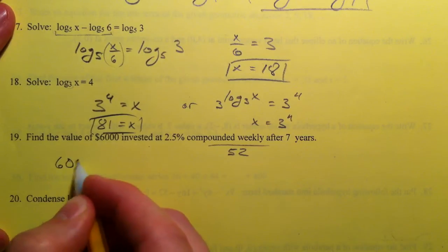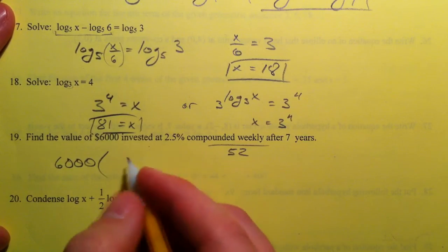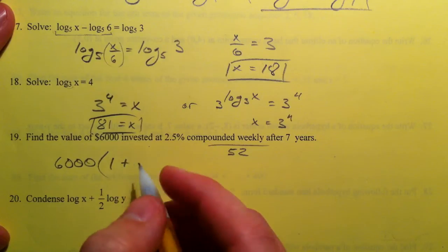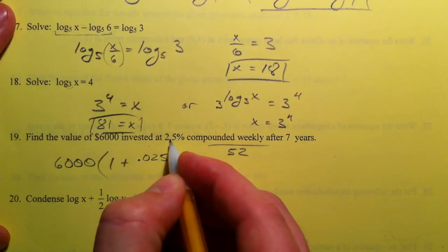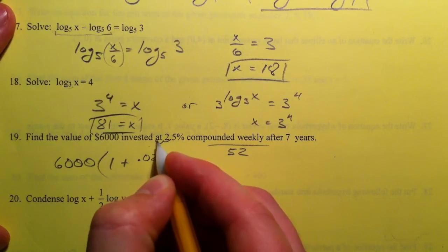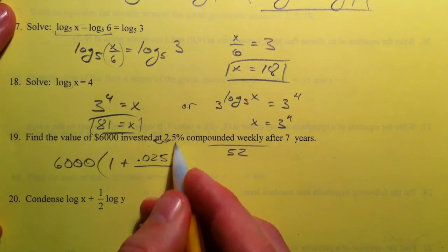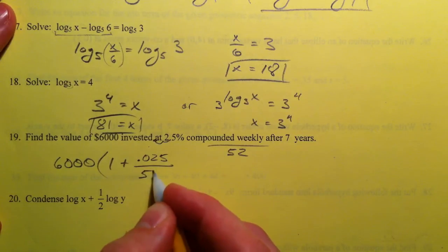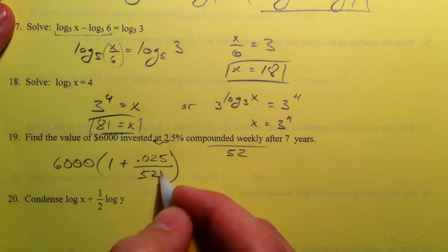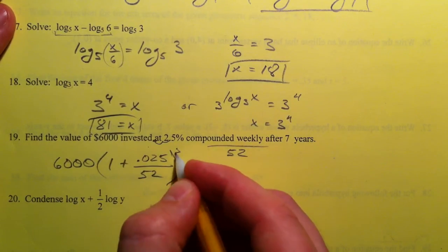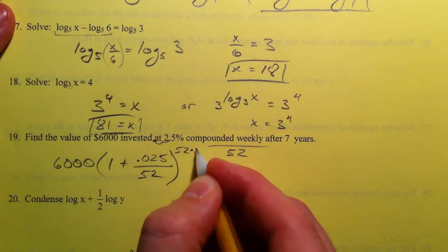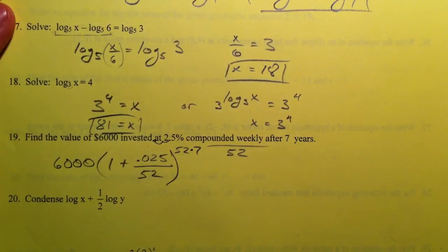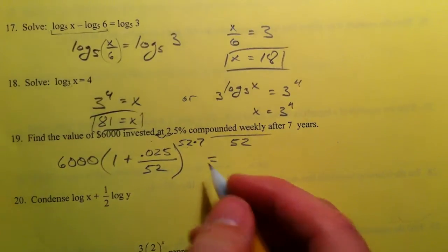Find the value of $6,000 invested at 2.5% compounded weekly. There are 52 weeks in a year. We're going to take our $6,000 and do our 1 plus our interest rate, 0.025. Remember that we're changing it back twice. And we're going to cut that interest rate into 52 parts so that we only earn 1/52 of 2.5% every week. And then there are 52 weeks in a year. So after 1 year, we'll have 52, and then we want 7 years, so we're going to multiply that by 7.